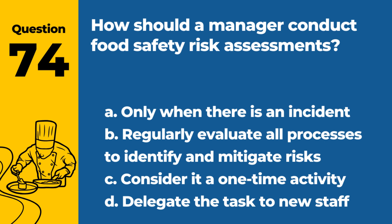Question 74. How should a manager conduct food safety risk assessments? A. Only when there is an incident. B. Regularly evaluate all processes to identify and mitigate risks. C. Consider it a one-time activity. D. Delegate the task to new staff. Answer: B. Ongoing risk assessments are vital to identify potential hazards and implement measures to mitigate these risks.